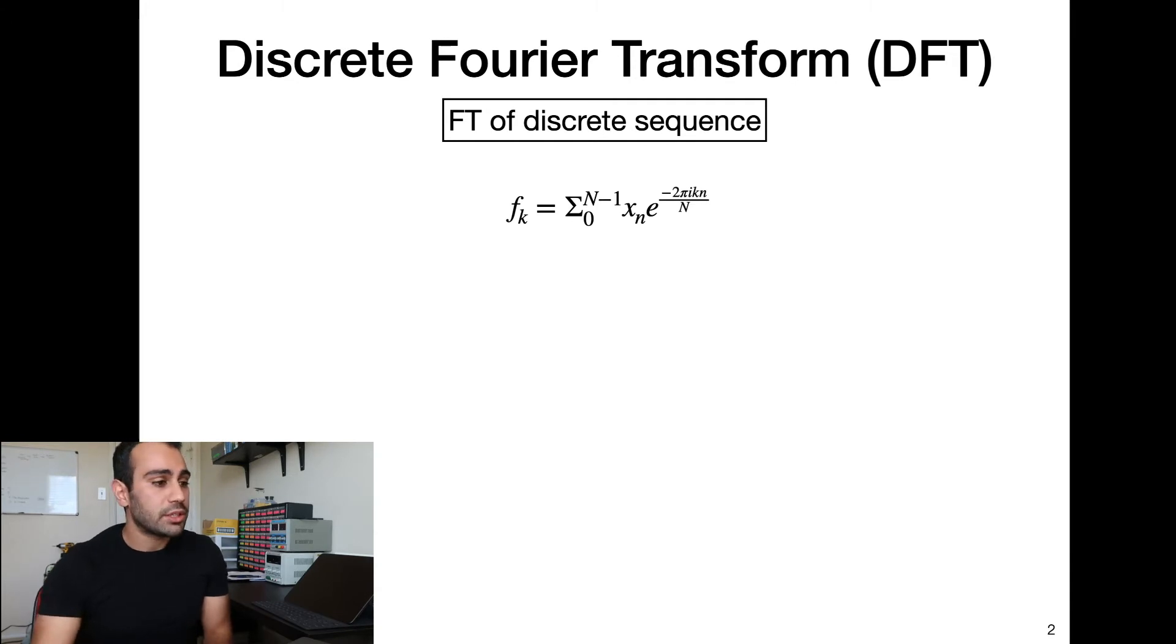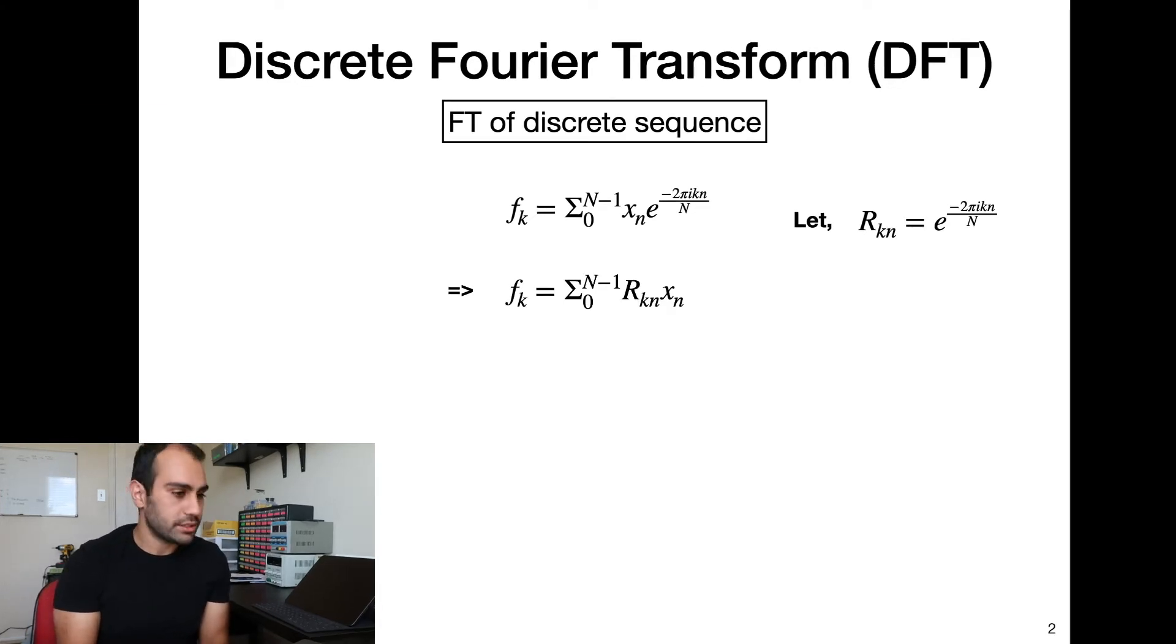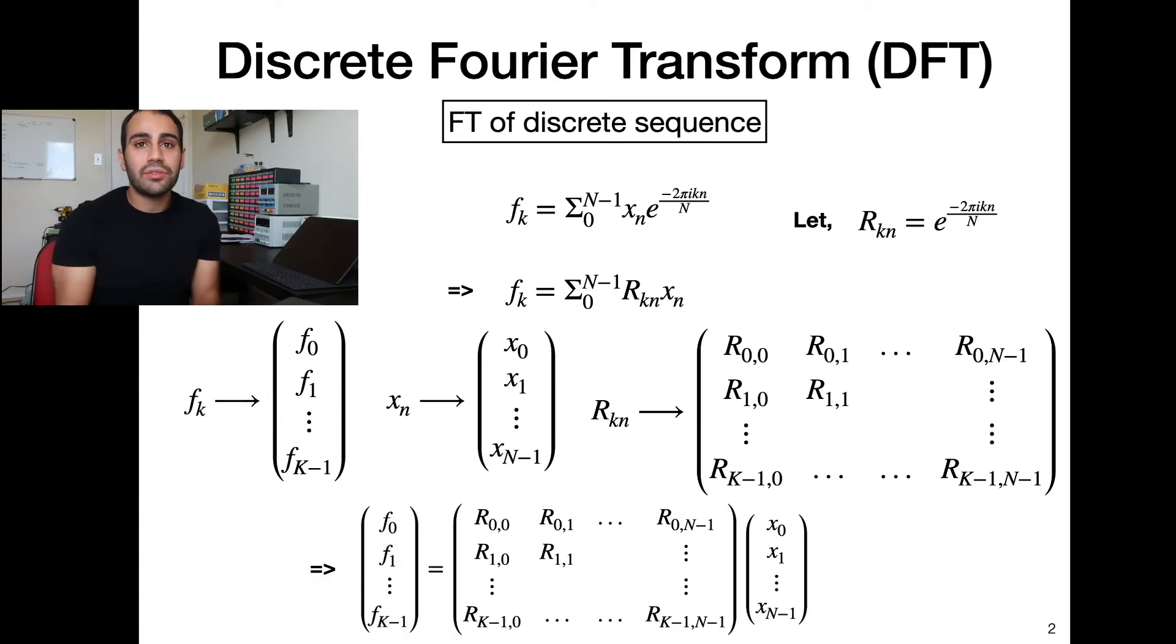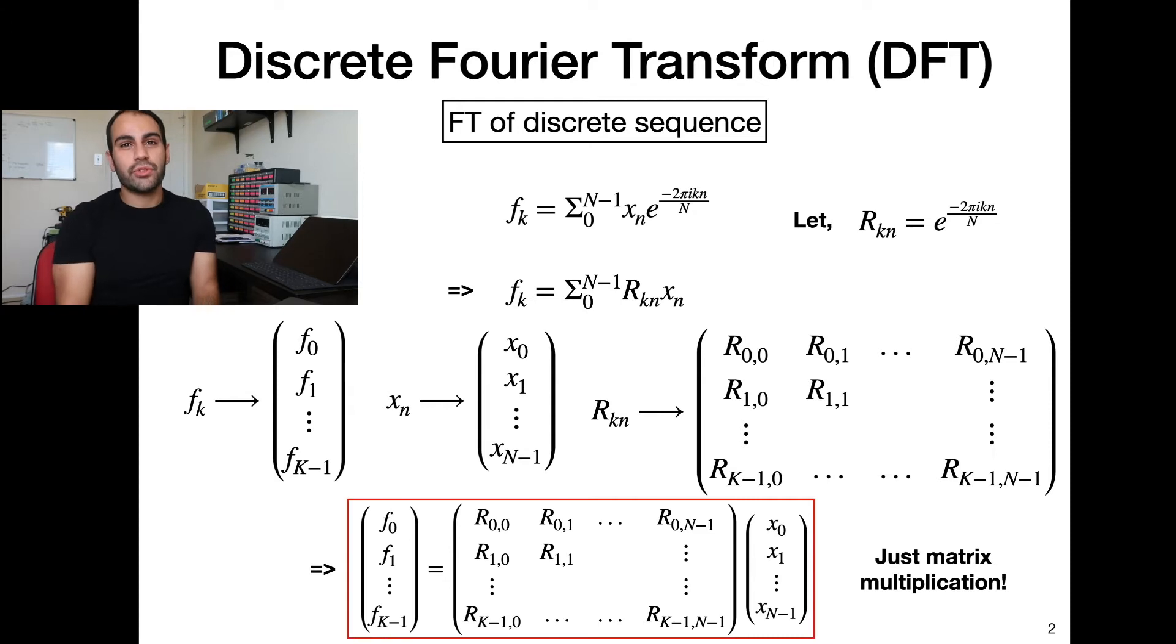Just how you can digitize your audio signal, you can discretize your Fourier Transform. Basically you convert your infinite integral to a sum over n elements. So let's take a closer look at this expression. We have f sub k equals the sum from 0 to big N minus 1, with x sub n times e to the minus 2 pi i k n over big N. We can define this term, big R sub kn, and set that equal to e to the minus 2 pi i k n divided by big N. So we can rewrite our sum in terms of these two elements. Because of the nice properties of matrix multiplication, we can write our sum equivalently as matrix multiplication. So that's nice. Discrete Fourier Transform is just matrix multiplication.